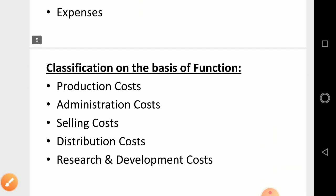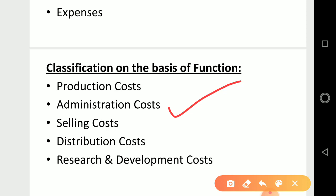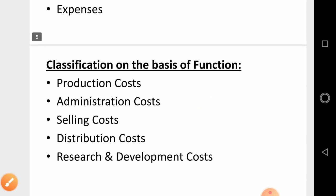The last classification is on the basis of function. First is production cost — costs related to or concerned with production, like machine repair expenses, all go under production cost. Second is administration cost — costs related to administration, like office light bill, telephone bill, stationery expenses — all office-related expenditure goes under administration cost.